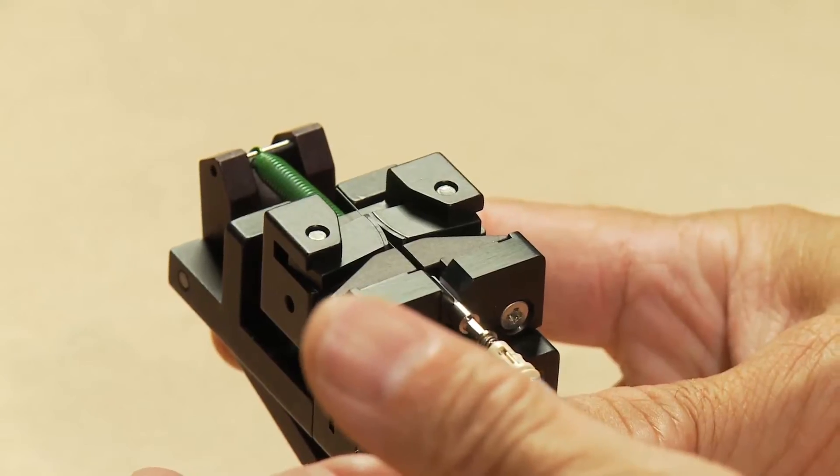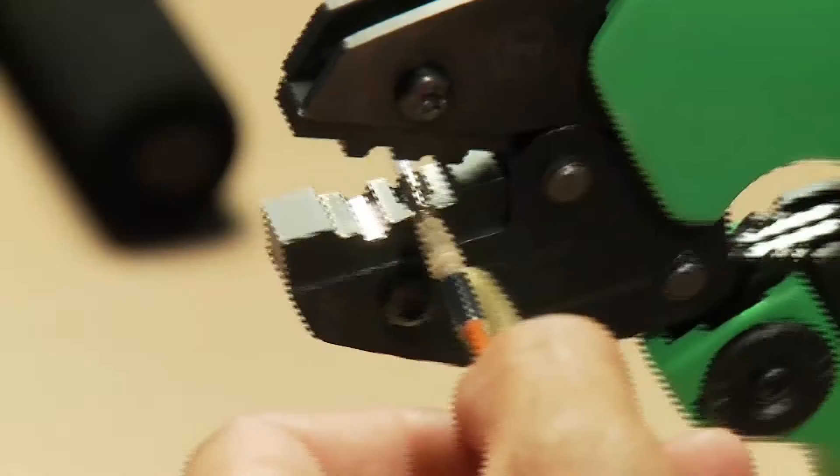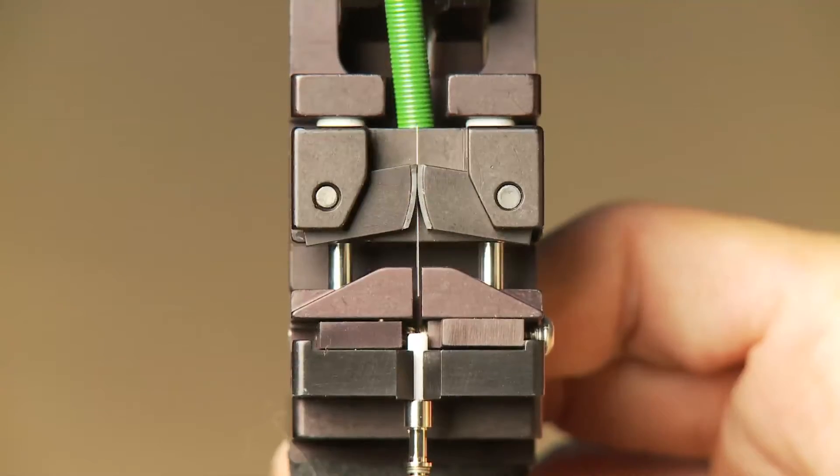Gently depress the trigger, let the cleave tool do the work. Just crimp, cleave, and leave.